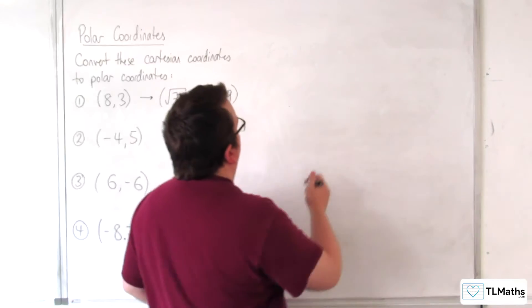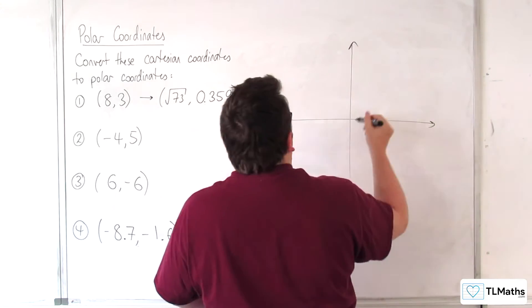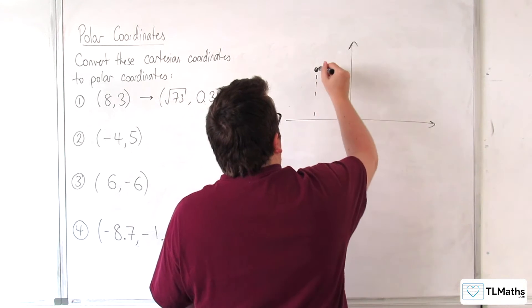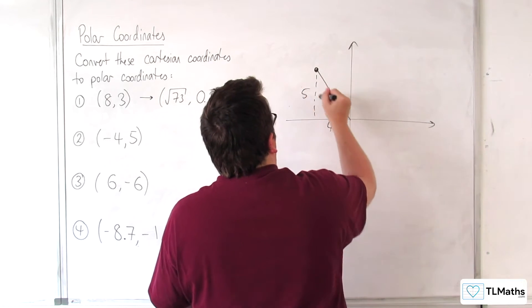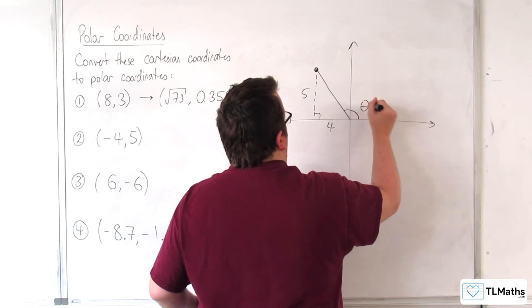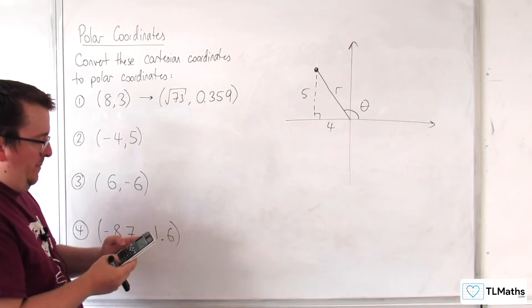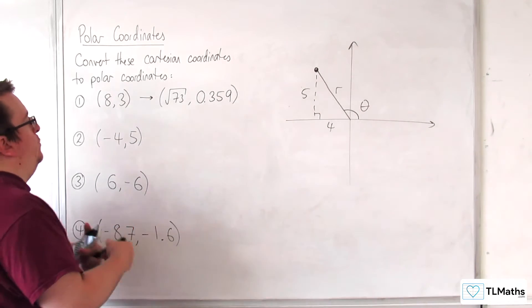So number 2, (-4, 5), somewhere up here. So 4, 5. So that's the theta I need to find, this is R. Now R we can work out quite easily by doing the square root of 4 squared plus 5 squared, so root 41.